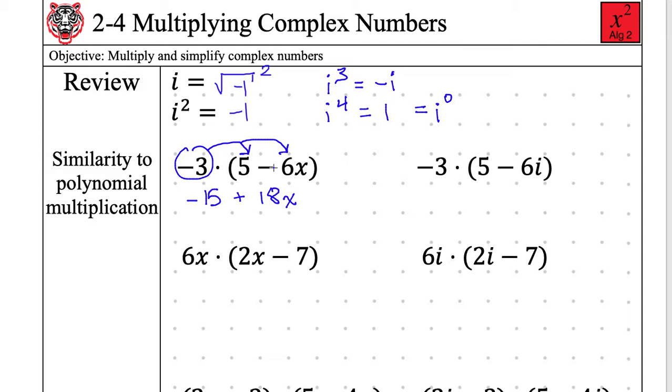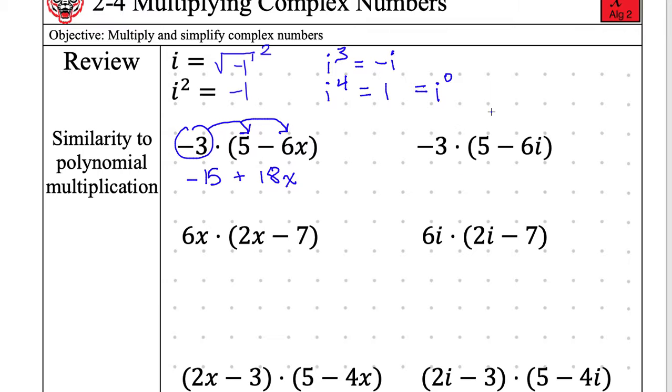We are just distributing. This right-hand side is a homework assignment. If you know how to do this, you are ready to go. Who can distribute this negative 3 into these terms? Beverly. Negative 15 plus positive 18i. Look at the similarities there. Thank you, Beverly. Look at the similarities. They're basically the same thing.